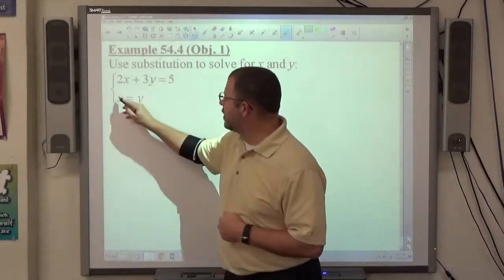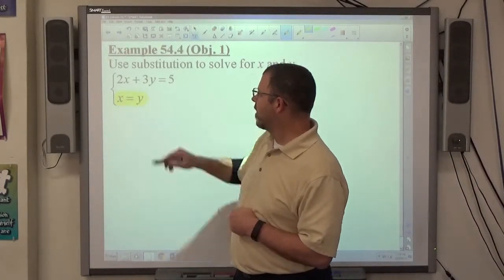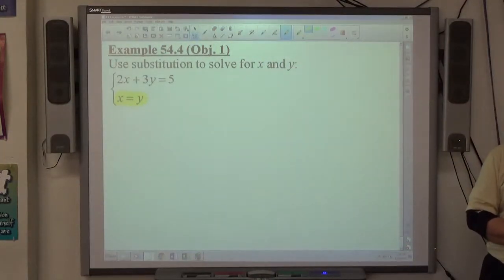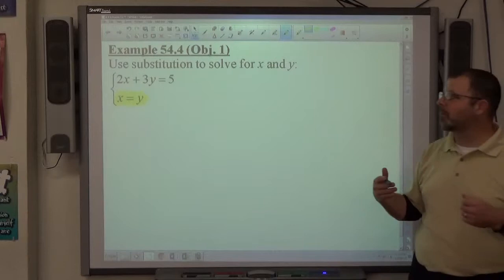So, look at this bottom equation, x equals y. That's telling me that x and y are exactly the same amount. If x equals 4, y equals 4. If x equals negative 72, y equals negative 72. If x equals 1 third, y equals 1 third. Okay, x and y are the same amount.